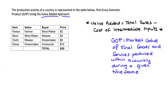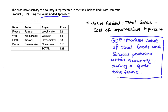I also have the definition of gross domestic product. GDP is equal to the market value of our final goods and services produced within a country during a given time frame. So the question is: from this table of information, how can we see value added in order to find our GDP?